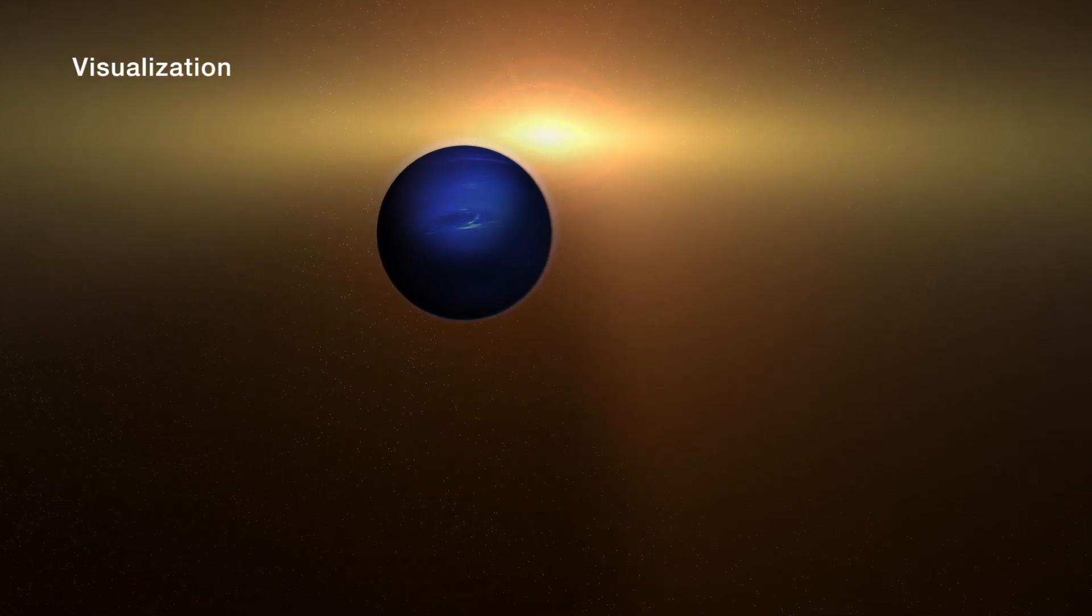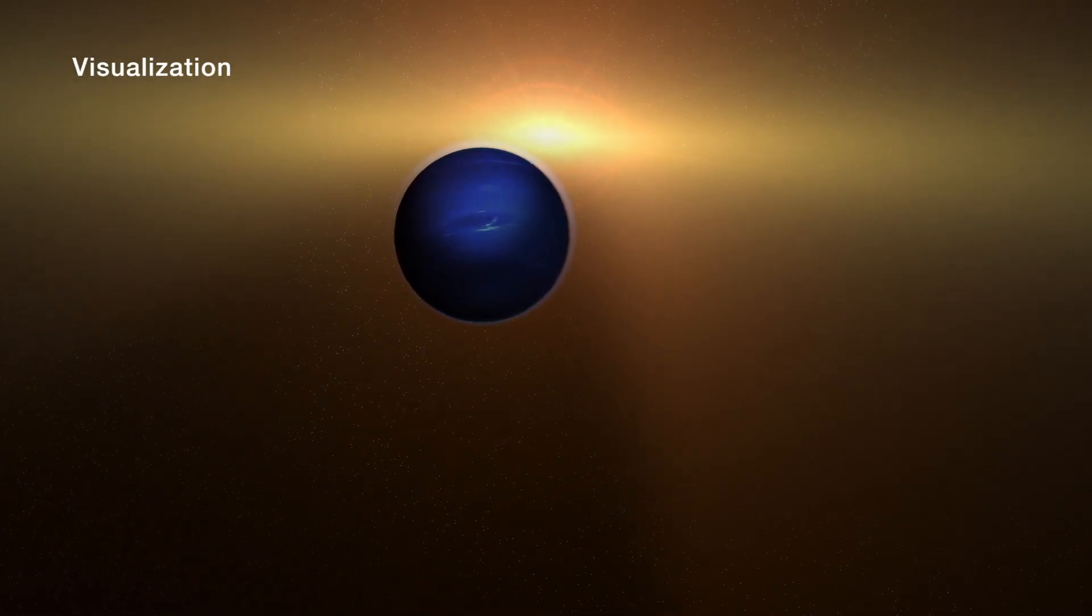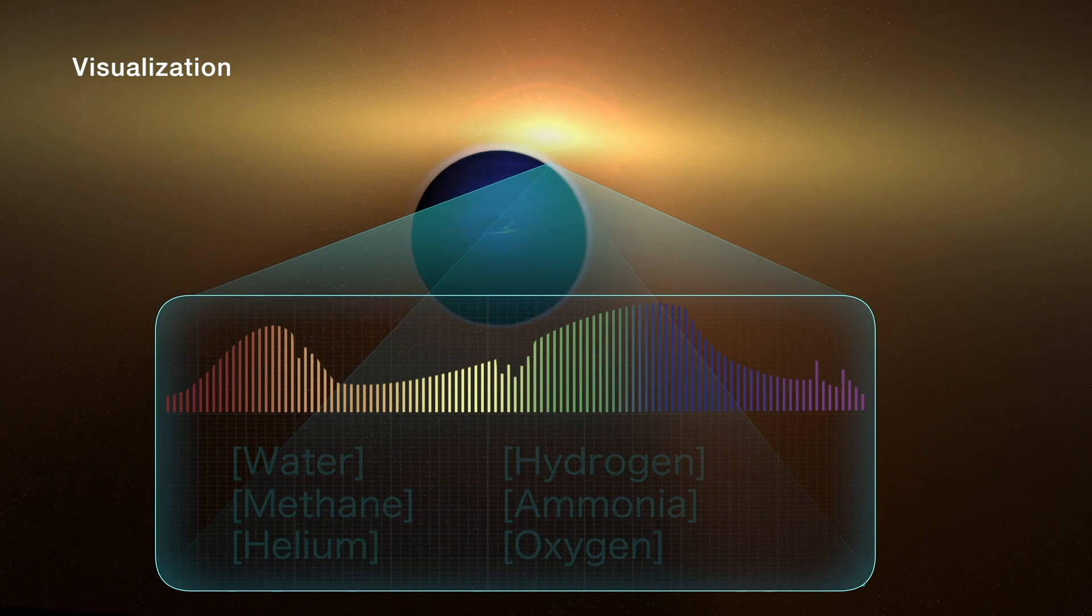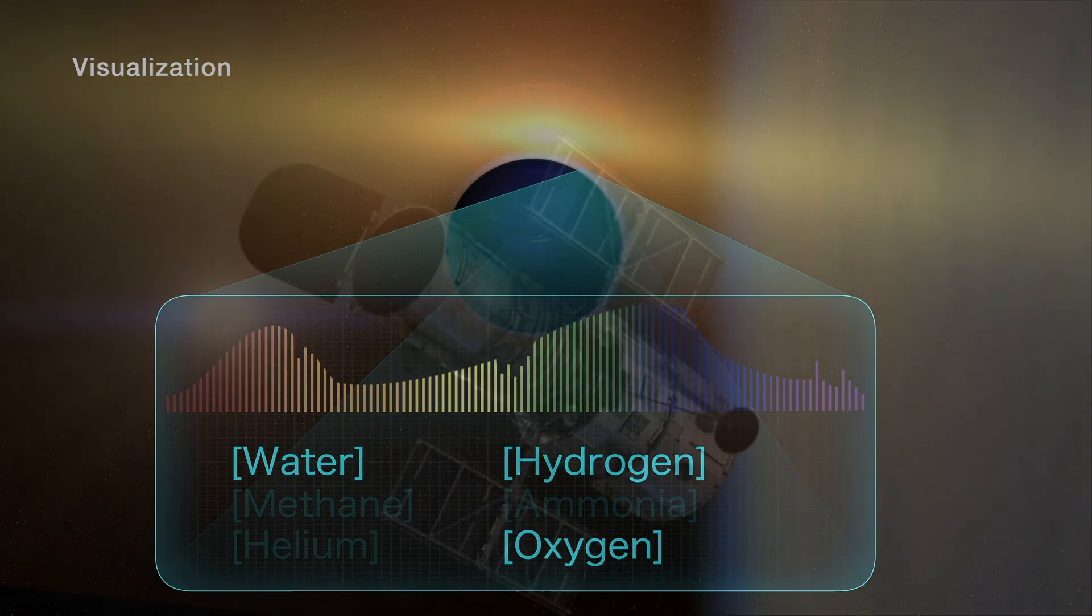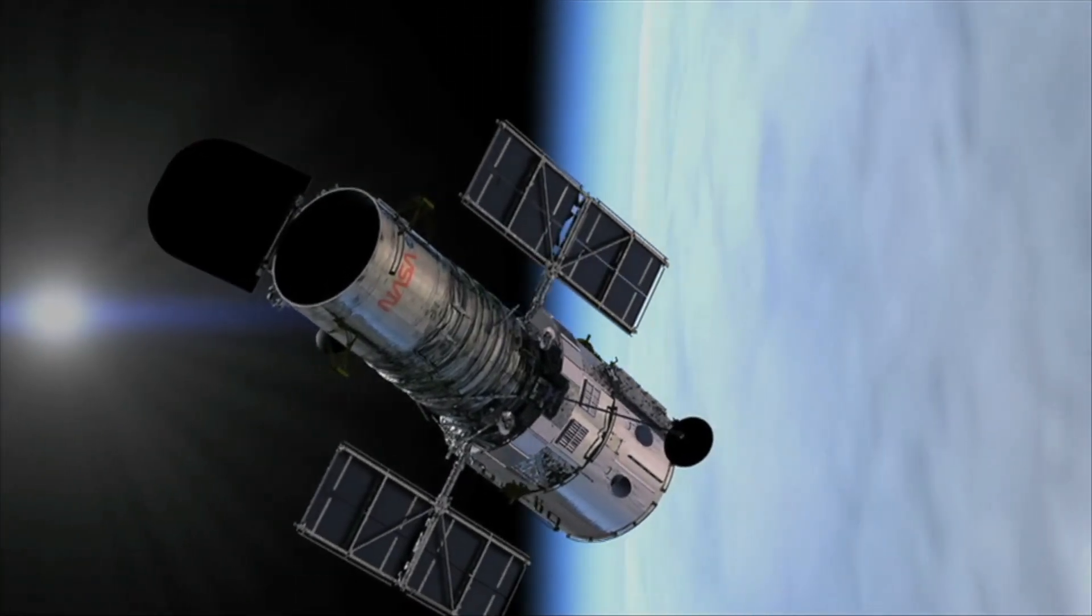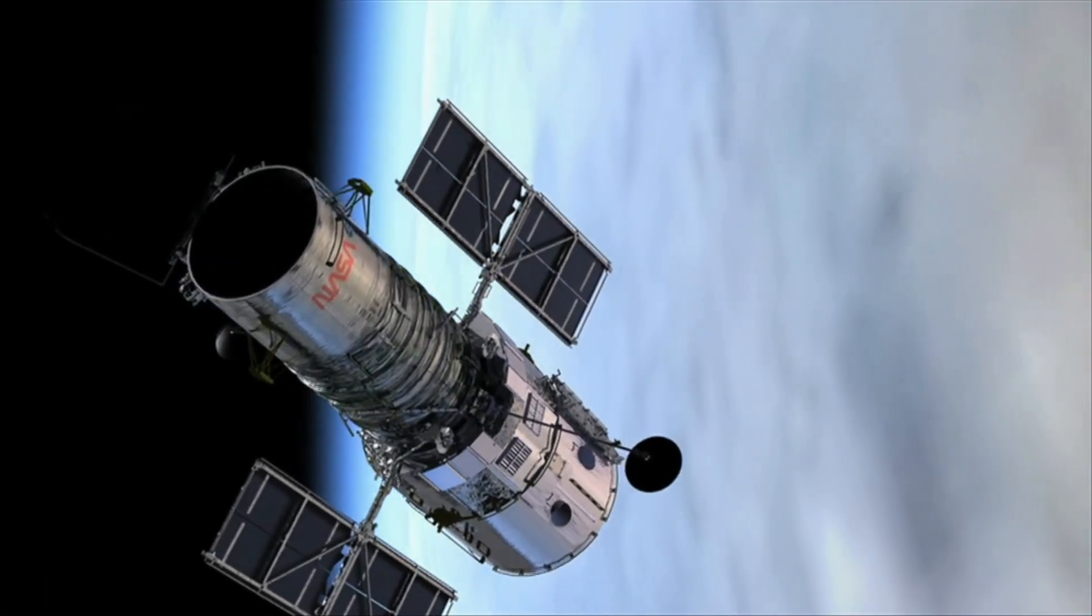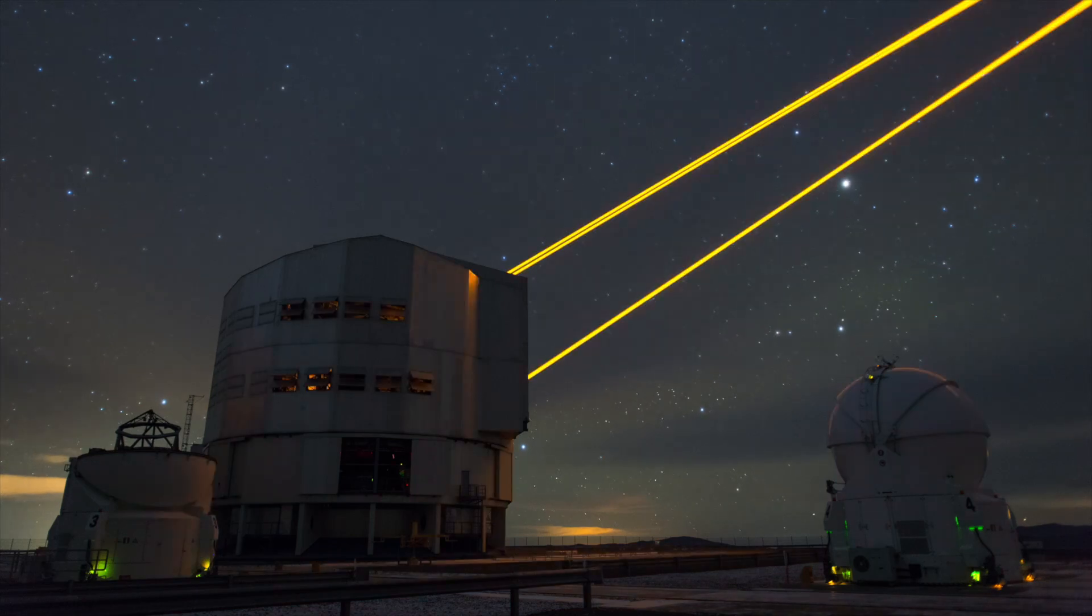When a ray of light is spotted, it is possible to estimate the exoplanet's atmospheric composition by splitting the light into wavelengths that correspond to different colors. Scientists have already used this method to determine the composition of planets using the Hubble, Kepler, and other ground-based observatories.